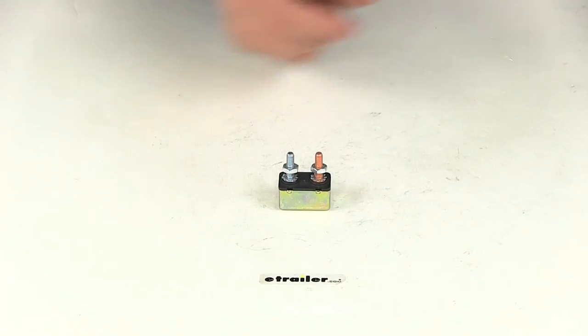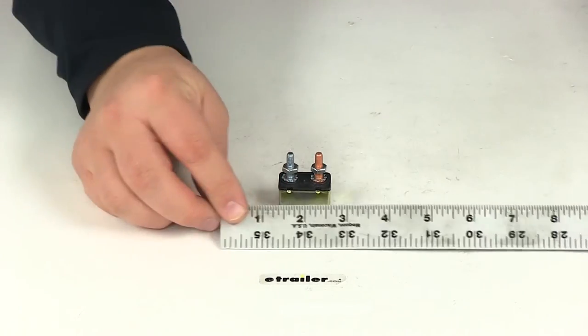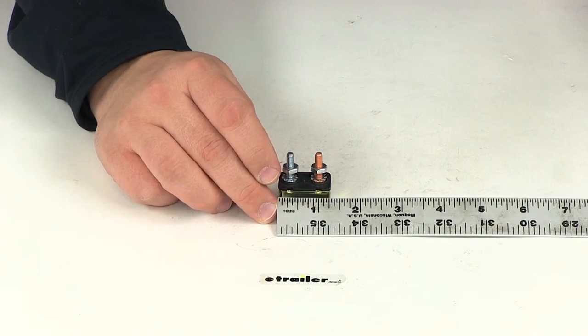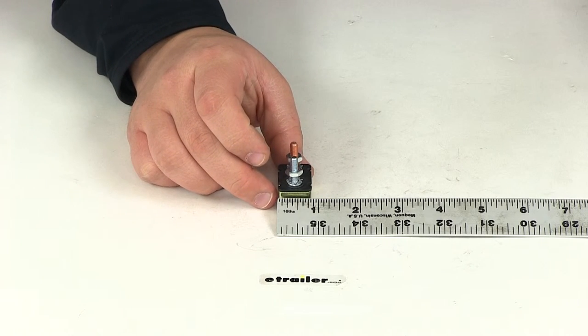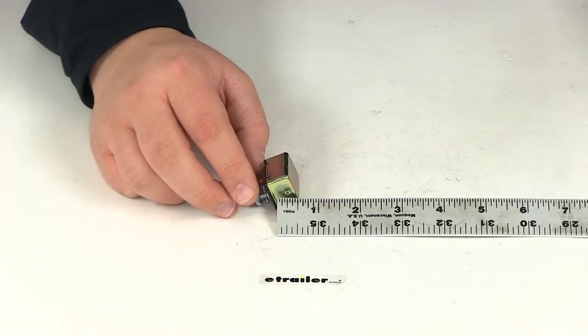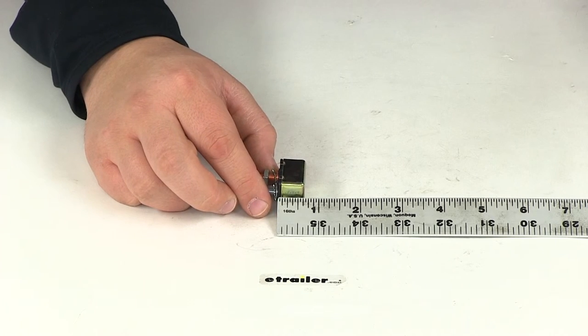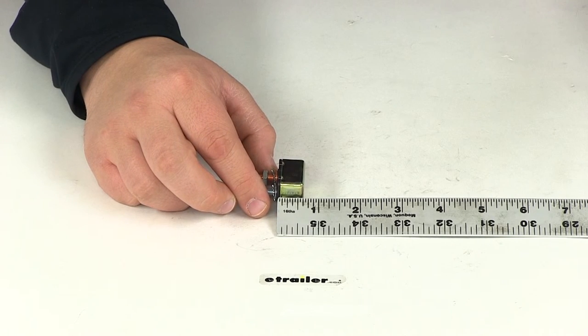We're going to go over the measurements of just the breaker portion. That's going to give us a length measuring this way of an inch and a quarter. Going this direction that's going to be about 13 sixteenths of an inch, and then measuring in this direction is going to give us a measurement of about five eighths of an inch.